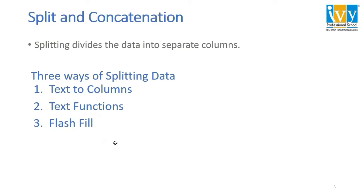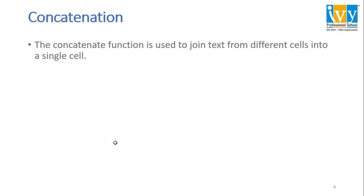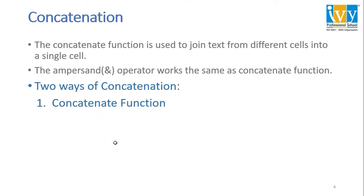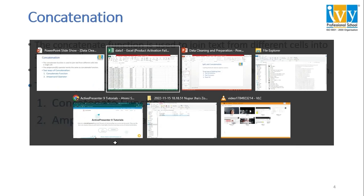Now let's see what concatenation is. The CONCATENATE function is used to join text from different cells into a single cell. The ampersand operator works the same as the CONCATENATE function. There are two ways of concatenation: first is the CONCATENATE function — in some Excel versions we have CONCAT as well, which is the same — and the second is using the ampersand operator.